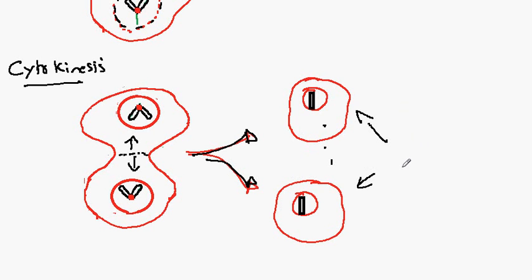In human cells we don't see one pair separating but 23 pairs separating at the same time. This is too difficult to show in one diagram.